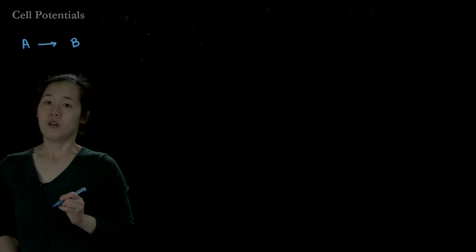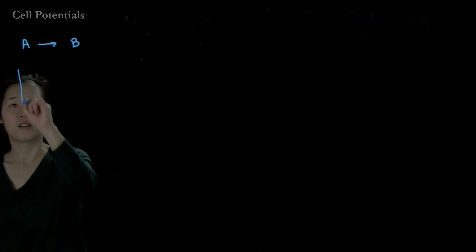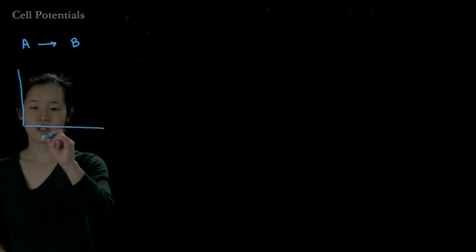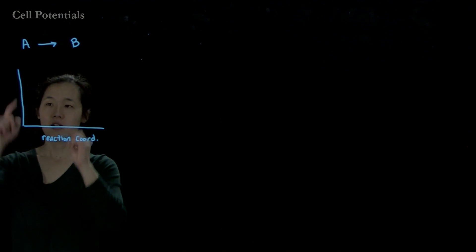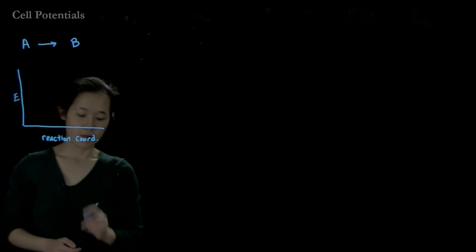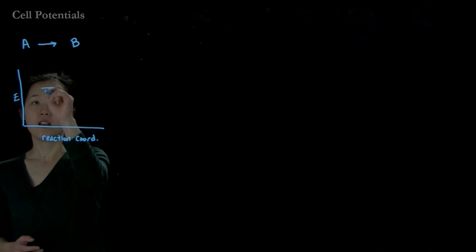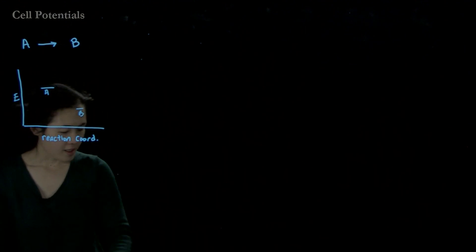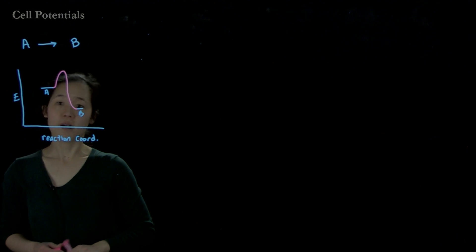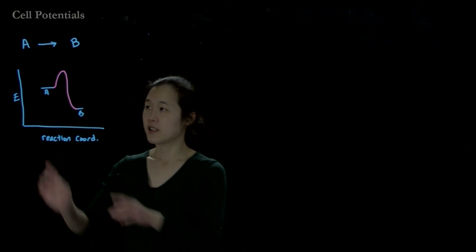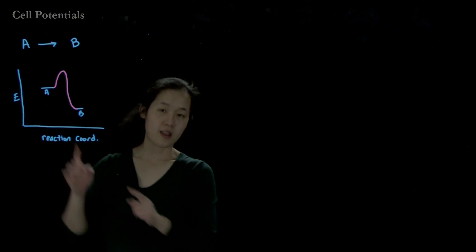Remember from your chemistry classes, if we have a reaction — let's say A going to B — we can think about the thermodynamics of this reaction, whether it's spontaneous or not, by drawing a reaction coordinate diagram. On the x-axis we have the reaction coordinate, and on the y-axis we have energy. We think about the energies of A and B and draw the reaction pathway from A to B. The pathway itself does not matter for thermodynamics — it's just the energies of the starting material and the product that determines whether it's spontaneous or not.